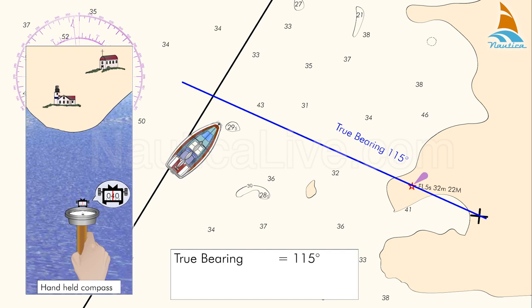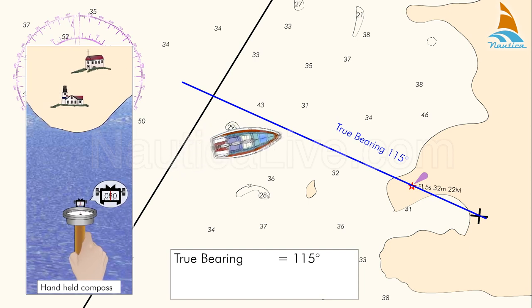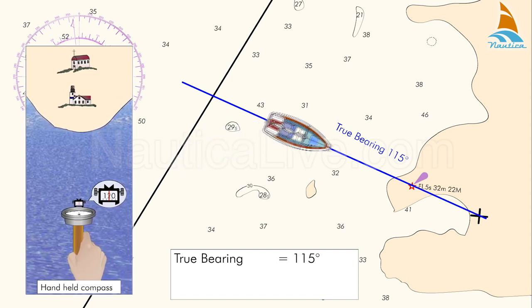Now, point the bow of your boat towards the two objects. When they come in transit, make a note of your compass bearing, which in this case is 120 degrees.